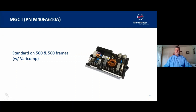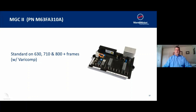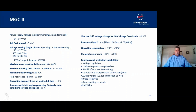Moving on to the MGC1, standard on our 500 and 560 frame, it uses the Varicomp as an option for overboost capability. It's one of our older voltage regulators, so it is plus or minus one percent accurate and the operating temperature range is only 60 degrees C. Its twin is the MGC2, standard on the 630 frame and larger, with Varicomp available for overboost to improve voltage drop on larger AC motor loads. Both the MGC1 and MGC2 provide for a remote rheostat and also allow an auxiliary input for a power factor correction device.